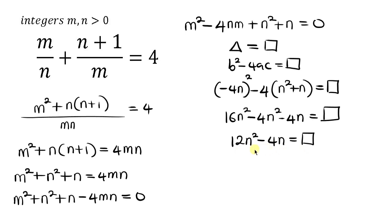So now let's factorize. You notice that 4n is common. So we can factor 4n out. Now 12n² divided by 4n, I'm going to be having 3n minus. Now 4n divided by 4n, I'm going to be having 1.